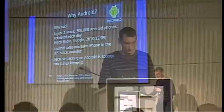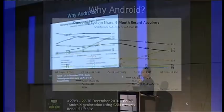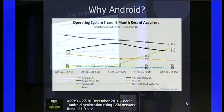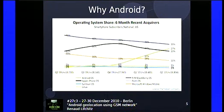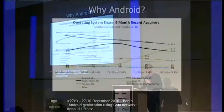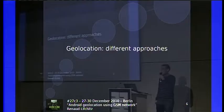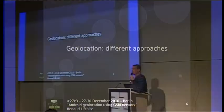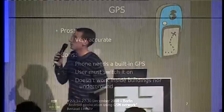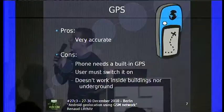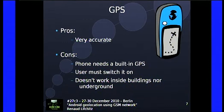These are the market shares for Android phones, iPhones, and BlackBerries. Android is becoming the second largest market share in the US. Now let's talk about geolocation, which is far more interesting. To geolocate a phone you have different ways. You can use the integrated GPS found on most phones.